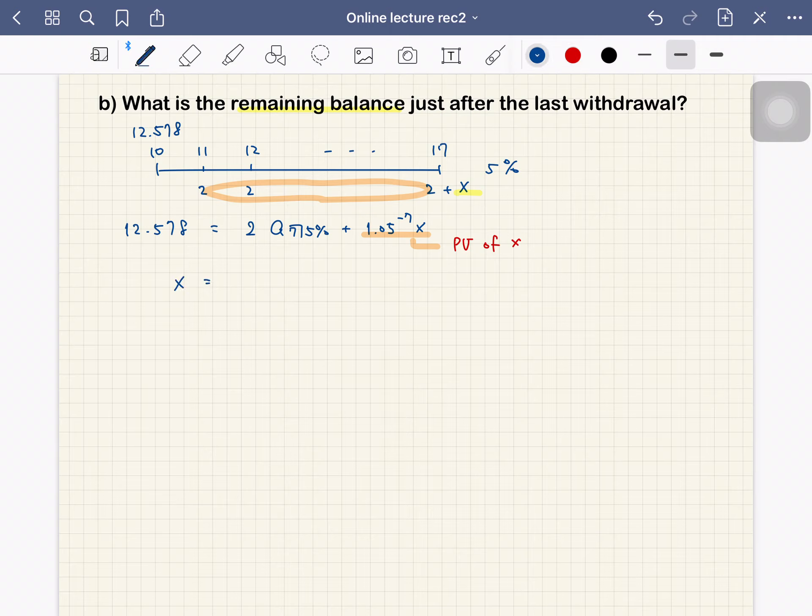So x is equal to 1.05 to the 7th power, then we move this 2 times a angle 7 to the other side. So 12.578 minus 2 times a angle 7 at 5%. So this becomes 1.41. So the answer is $1.41. The remaining balance is $1.41.